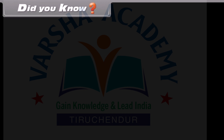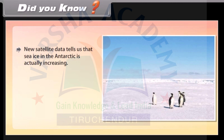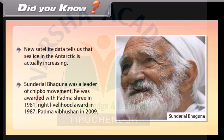Did You Know: New satellite data tells us that sea ice in the Antarctic is actually increasing. Sundar Lal Bahuguna was a leader of the Chipko Movement. He was awarded the Padma Shree in 1981, the Right Livelihood Award in 1987, and the Padma Vibhushan in 2009.